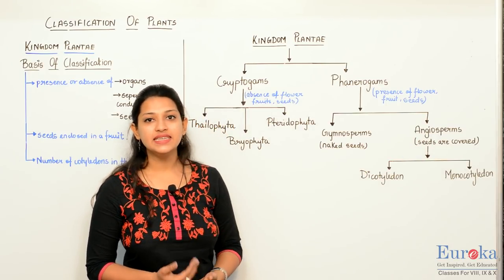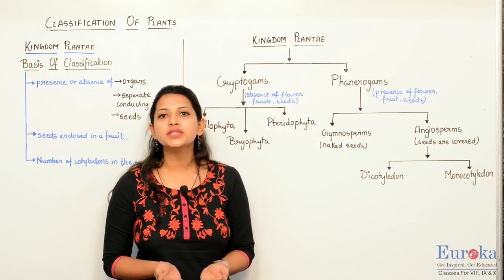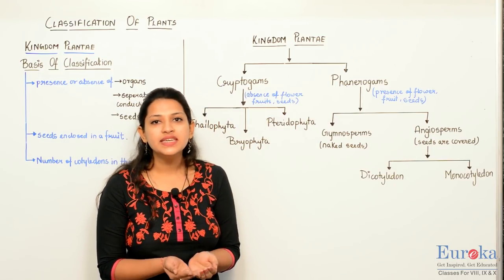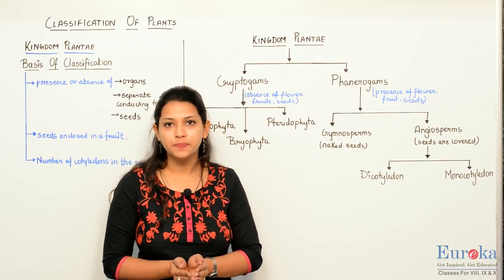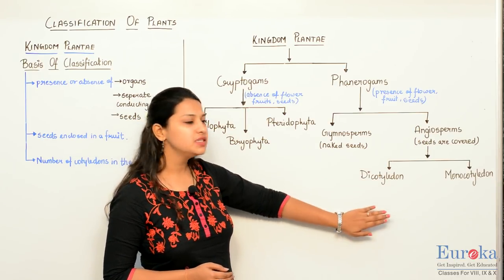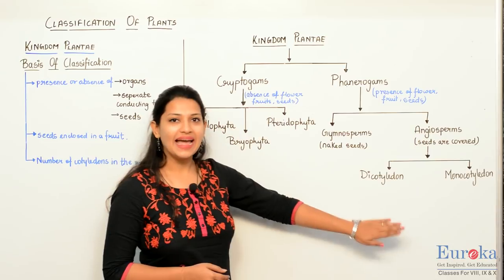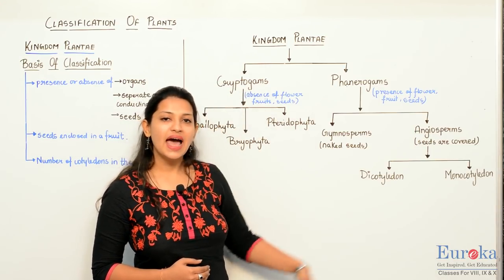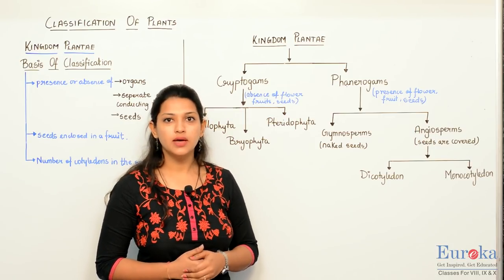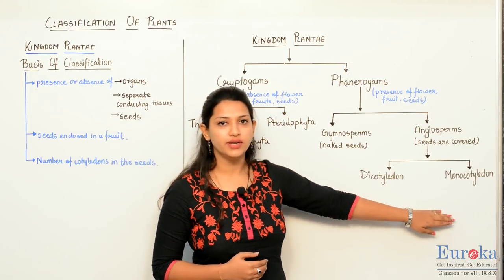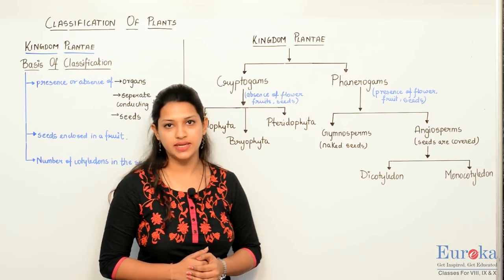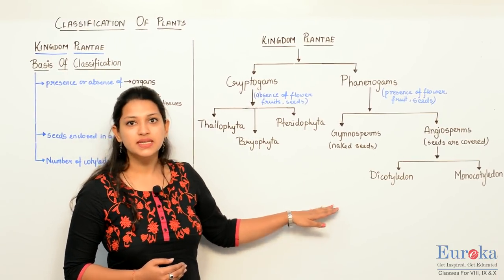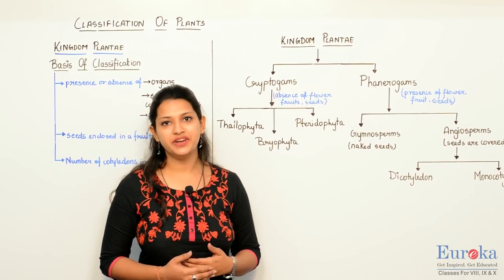Gymnosperms have naked seeds — that is, they are not enclosed in a fruit. Whereas Angiosperms have covered seeds — that is, they are enclosed in a fruit. Angiosperms are further divided into two types: Dicotyledon and Monocotyledon. Dicotyledons have two cotyledons in the seeds, whereas Monocotyledons have a single cotyledon in the seed. Further, we look into detail of each division, studying their characteristics and examples.